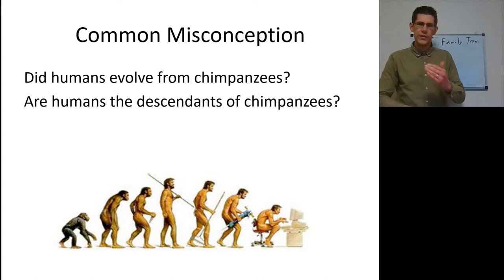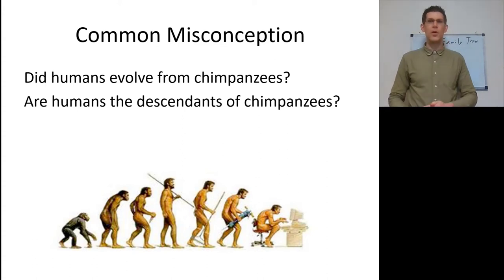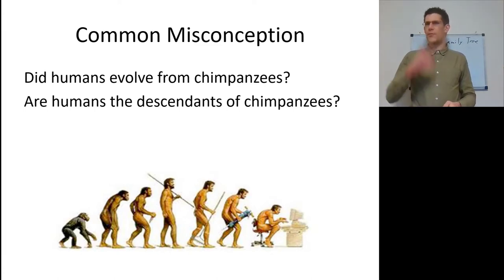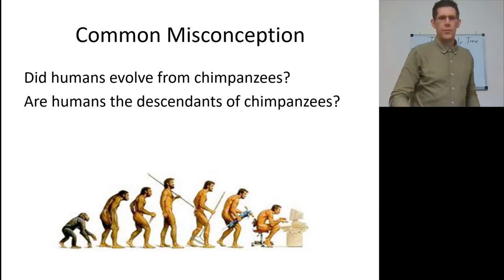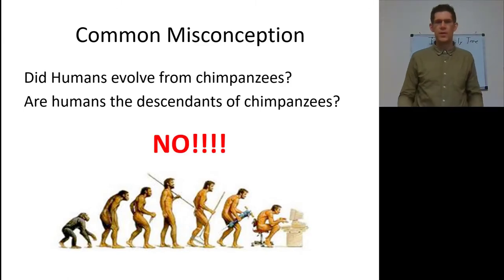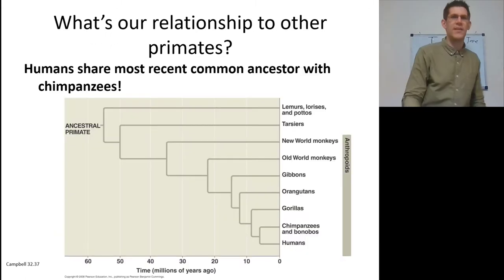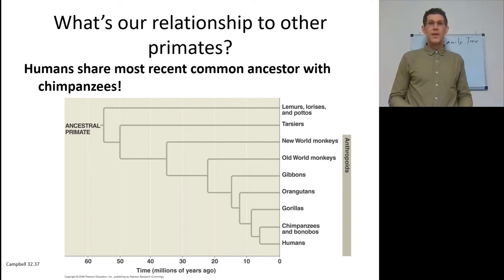I want to first clear a common misconception. We always hear: did humans evolve from chimps? Are humans descended from chimpanzees? If so, why are there still chimpanzees? This is a silly argument because no, we didn't evolve from chimpanzees. We share a common ancestor with chimpanzees. And here is the family tree that we're going to be spending our time on.